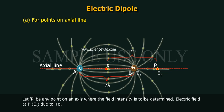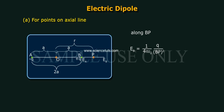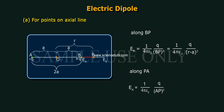Electric field at P, Eb, due to plus Q: Eb is equal to 1 by 4 pi epsilon naught Q by BP whole square along BP, which is equal to 1 by 4 pi epsilon naught Q by (R minus A) whole square. Electric field at P due to minus Q, Ea: Ea is equal to 1 by 4 pi epsilon naught Q by AP square along PA, which is equal to 1 by 4 pi epsilon naught Q by (R plus A) whole square.